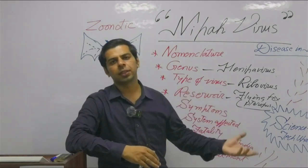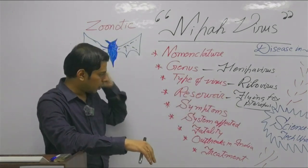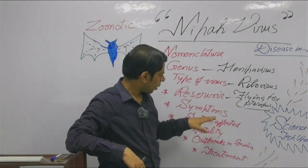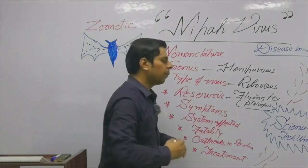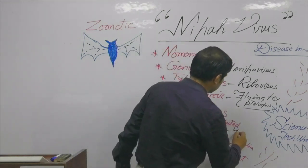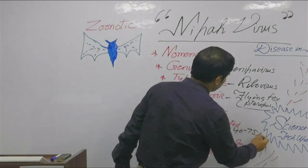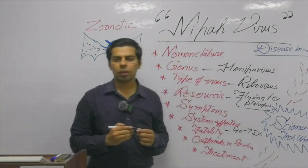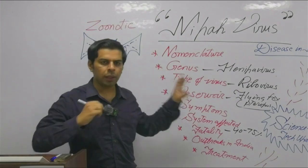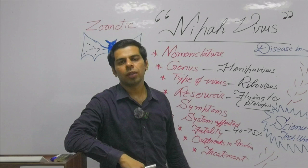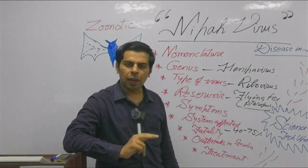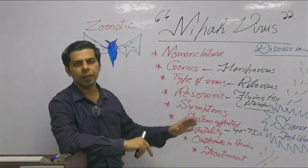Coming to the fatality part, in certain cases it is seen that there is high fatality. Like in this case, within two days almost five individuals have lost their lives. The original Nipah outbreak in Malaysia saw almost 108 people lose their lives. It carries a high fatality rate.